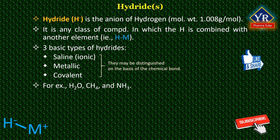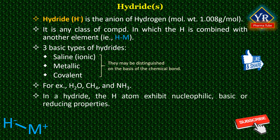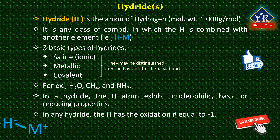Thus, hydride is a chemical compound where the hydrogen atoms exhibit nucleophilic, basic, or reducing properties. Usually, in a hydride, the hydrogen has the oxidation number equal to minus one.